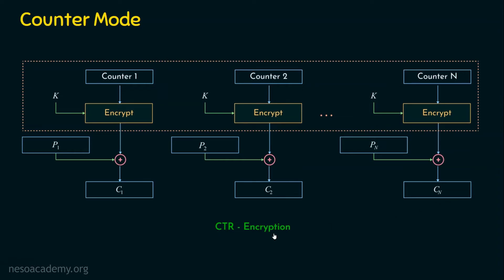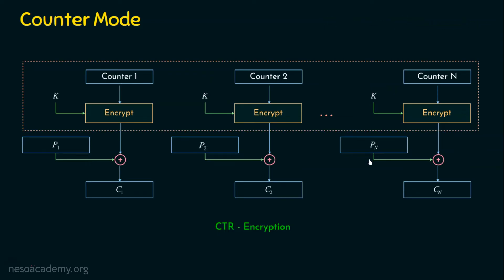This is the counter encryption. This part — the encryption function — is common throughout the entire process. For every plaintext, the encryption function takes a different counter value: if the first is 10, the next is 11, then 12, and so on. Another advantage is that this can be applied for real-time use. If you keep the system ready with the already-encrypted counter values, then as and when the plaintext is generated, you can simply perform XOR and generate the ciphertext, making this mode suitable for encrypting real-time traffic.